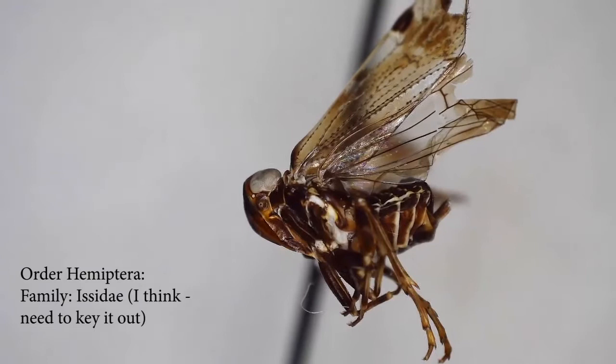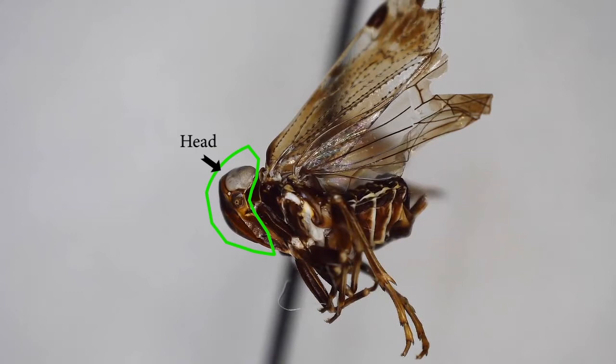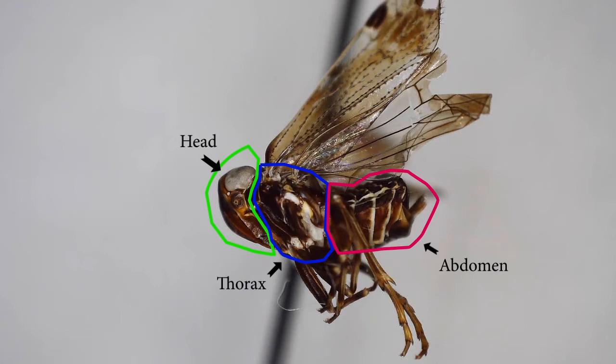Here's another example. This is also from the order Hemiptera, but this is a different family — I think it's Isidae. What's really nice about this specimen is it shows you a characteristic of the order Hemiptera, which is having a head that is extended into a beak-like mouth part. So there's the head, there's the thorax, and there's the abdomen right there in pink. That's a little bit easier to see in this specimen.